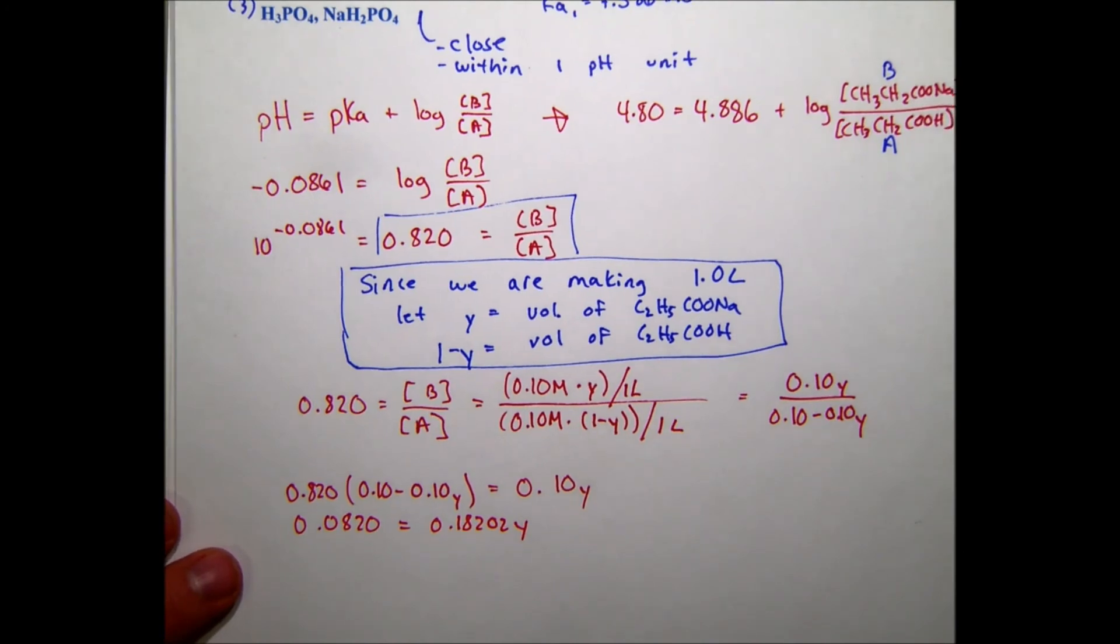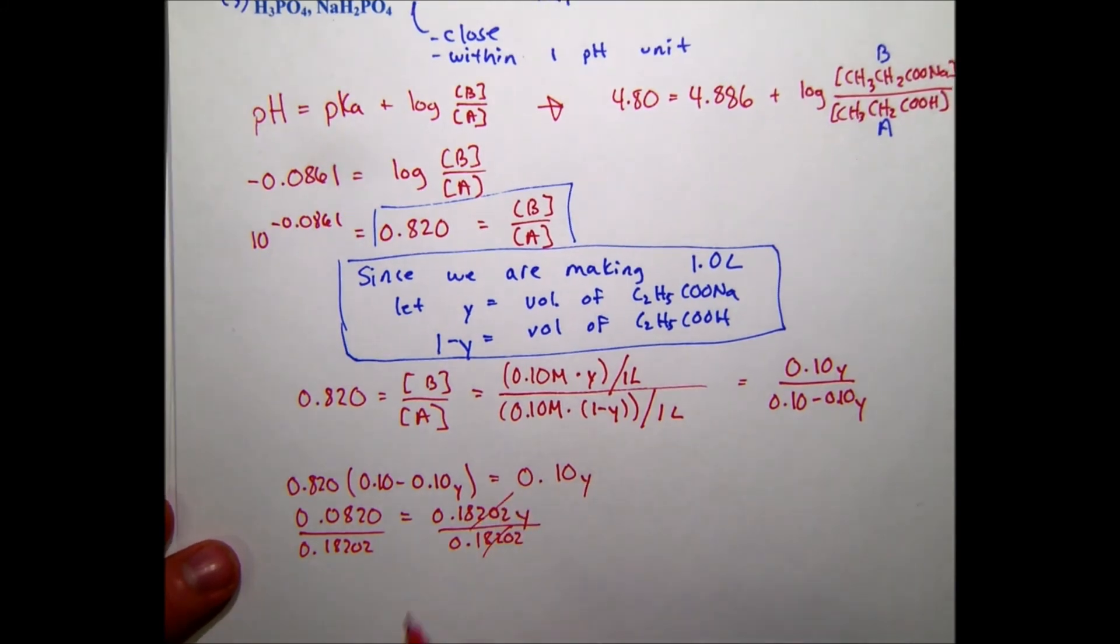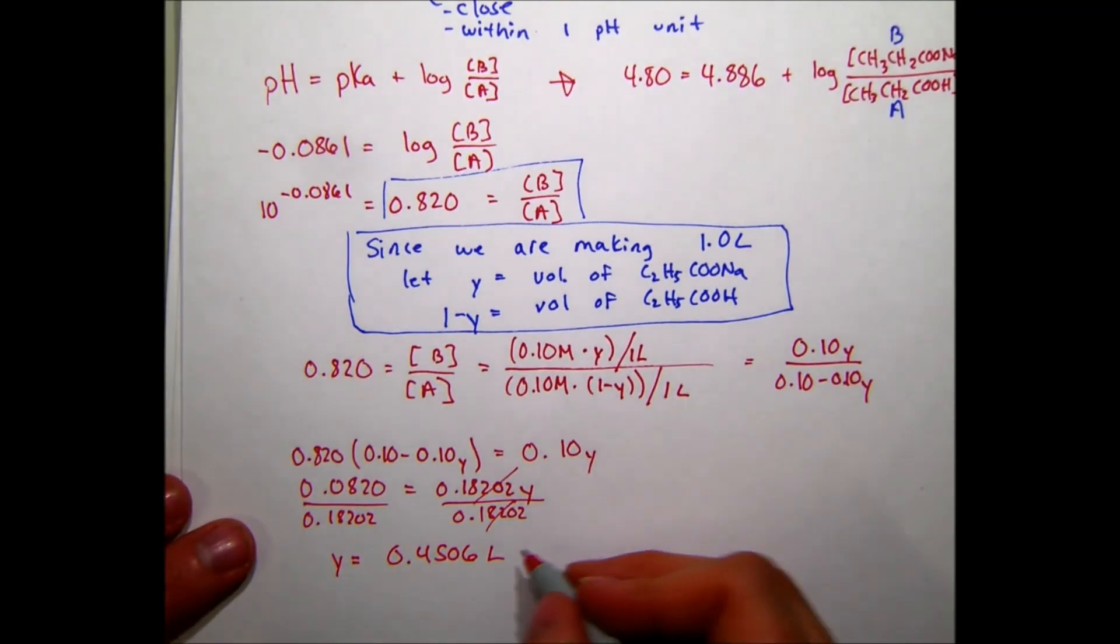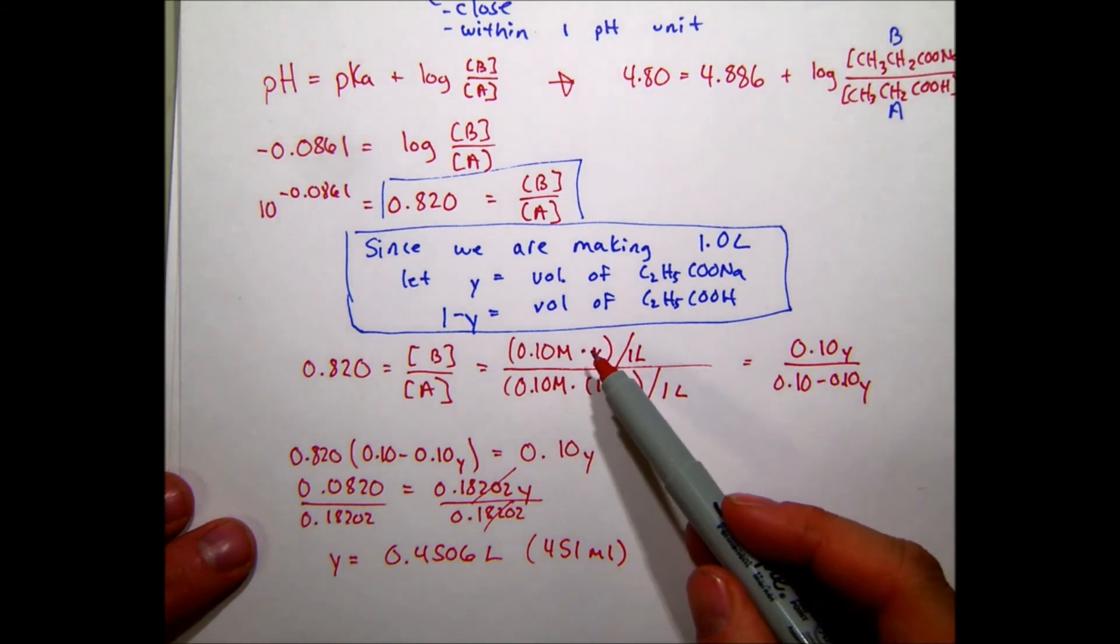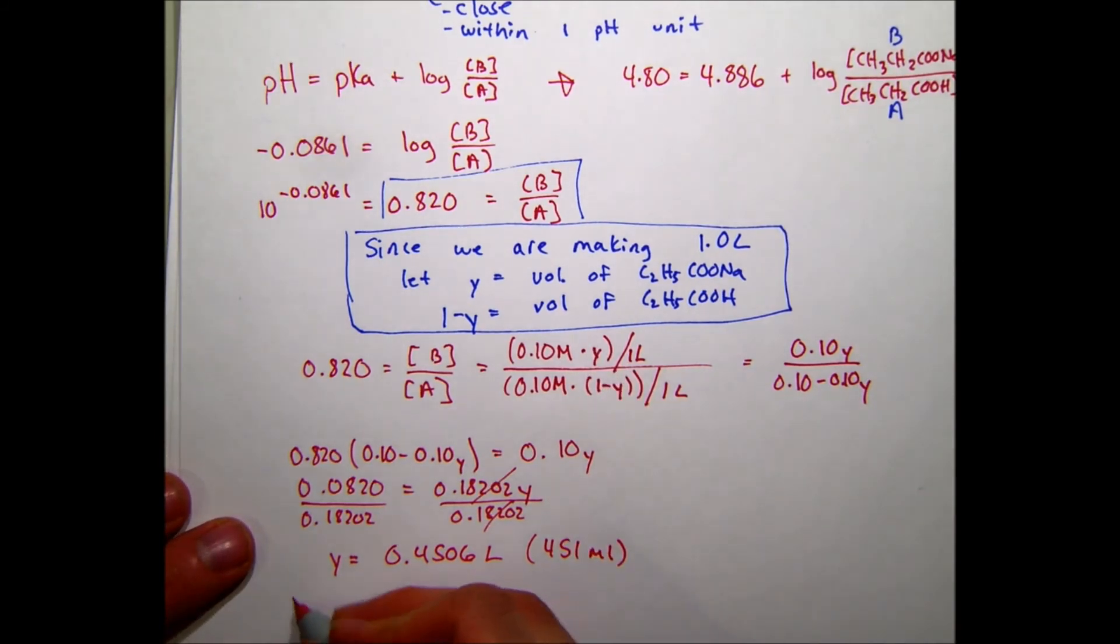I get down and I solve this: 0.0820 equals 0.1820 y. As we go through and solve this math equation, trying to solve for simple y, I now have y on one side. So I'm going to divide both sides. Of course, that's going to cancel on that side. And I'm going to find that y equals 0.4506 liters, which is 451 milliliters. And that corresponds to the volume for my base.